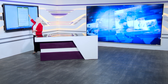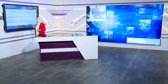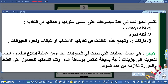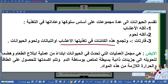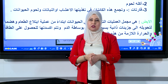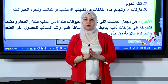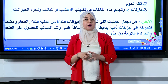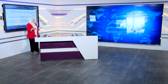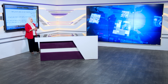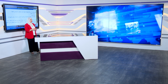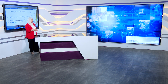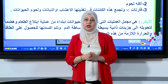تُقسم الحيوانات إلى عدة مجموعات على أساس سلوكها وعاداتها في التغذية: آكلات الأعشاب، وآكلات اللحوم، والقوارت. القوارت هي كائنات تجمع في تغذيتها الأعشاب والنباتات ولحوم الحيوانات، وخير مثال عليها الإنسان. آكلات اللحوم تشمل المفترسات مثل النمر والأسد والصقور والطيور الجارحة عموماً.